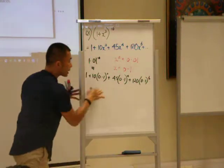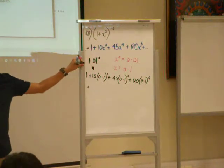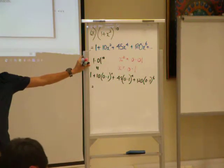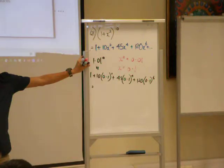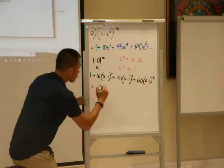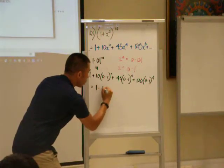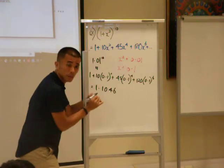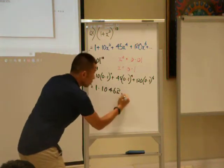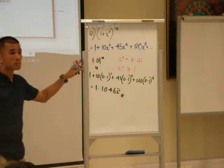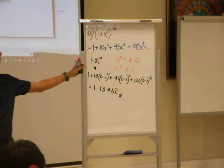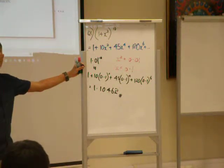Then press the calculator now. Can everyone press? Yes, I got 1.10462. You all get this answer? You all get the same answer? Do we need to approximate to 3 significant figures? Why not?